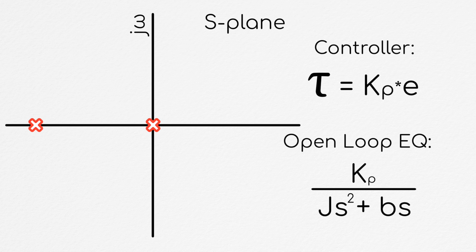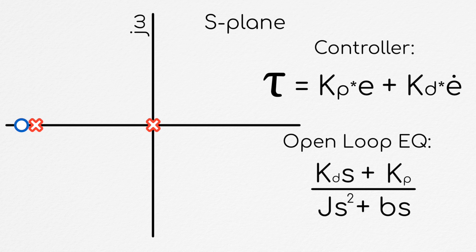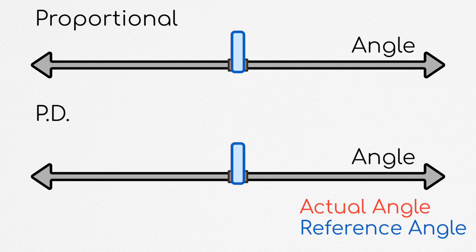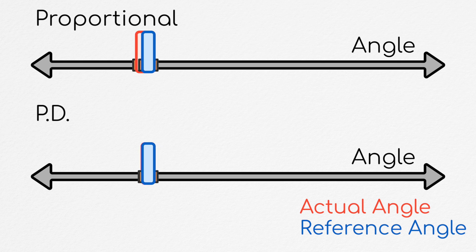However, if our system's damping is not large relative to its inertia, we might want to add a zero to the system by using a proportional derivative controller. Essentially, what this does is artificially increase the damping of the system. Returning to our analogy of a proportional controller as a spring, a proportional derivative, or PD controller, would be like making this connection with a spring-damper pair.